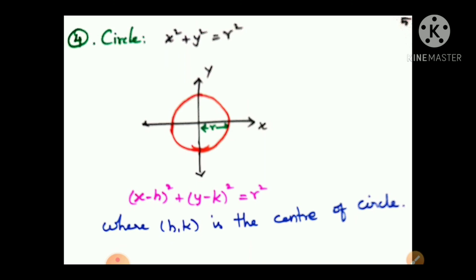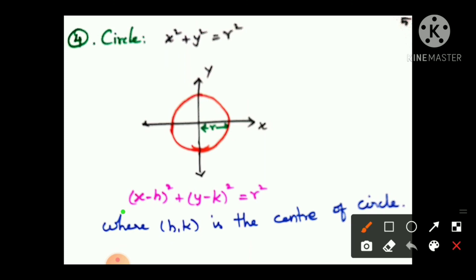The general circle equation is x squared plus y squared is equal to r squared, with center at the origin. If the center is at point (h, k), the equation becomes: (x minus h) squared plus (y minus k) squared is equal to r squared.